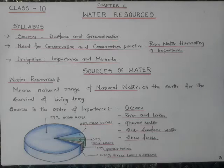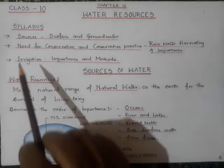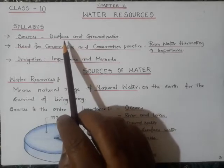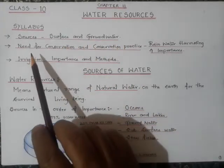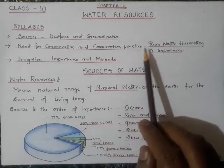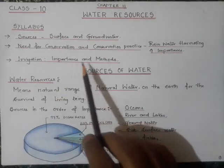Hello students, today we are moving on to a new topic: Chapter 11, Water Resources. This topic is allotted 10 marks in board examination. Before we start discussing, let's see what is in the syllabus: sources of water, surface water and underground water, need for conservation and conservation practices like rainwater harvesting and its importance, irrigation importance and methods.